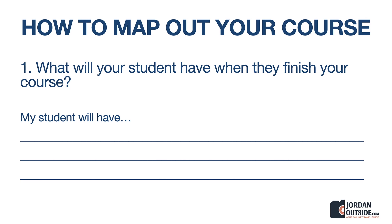In this lesson we're going to go over how to map out your course. The first thing you need to do is describe what your student will have when they finish your course. When you write this out, this is what your student is actually purchasing from you — the result. I've included a downloadable PDF that you can print out and go through this exercise with me. Write out what will your student have when they finish your course — what's the result they're buying your course for?